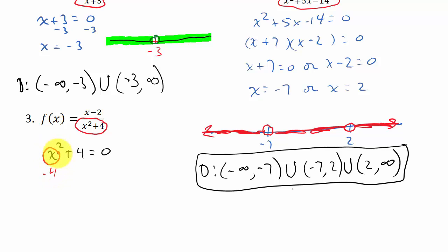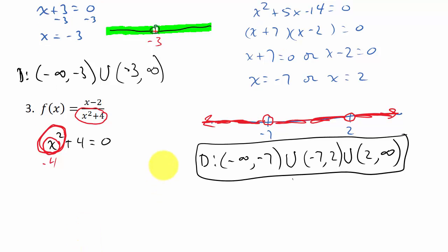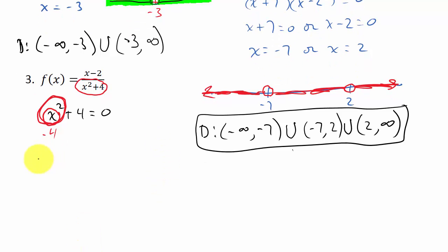So this denominator here will never be 0, because there's no way that x squared will be negative 4. That means our domain is everything - it's from negative infinity to positive infinity. It's all real numbers.